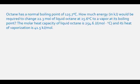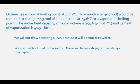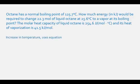For the second problem: octane has a normal boiling point of 125.7 degrees Celsius. How much energy in kilojoules would be required to change 22.3 moles of liquid octane at 25.6 degrees Celsius to a vapor at its boiling point? The molar heat capacity of liquid octane is 254.6 joules per mole degrees Celsius, and its heat of vaporization is 41.5 kilojoules per mole. We're starting with a liquid, so there's no melting phase, and we're working in moles instead of grams — all constants are already given per mole.